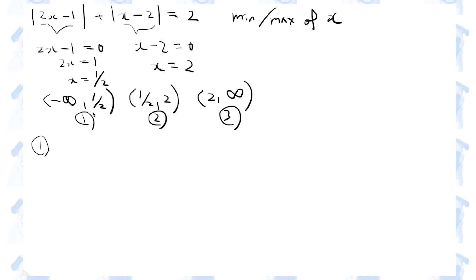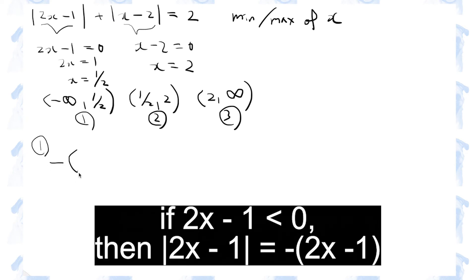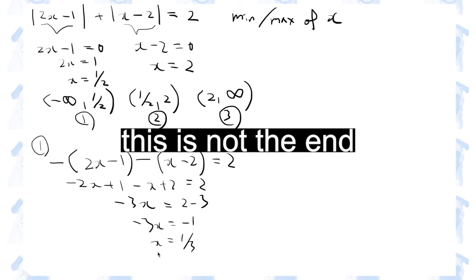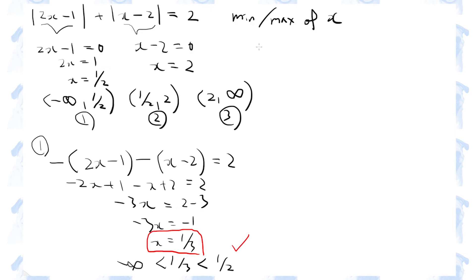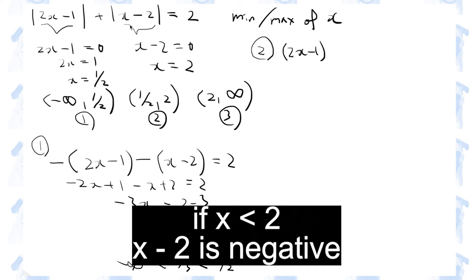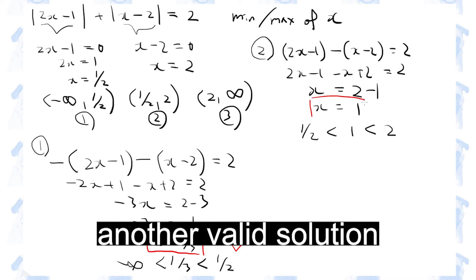If the value of x was in this first interval, then the value of this expression would be negative, so we need to put a negative sign before it, and then we can convert the absolute value sign into normal brackets. If the value of x was between these two values, this expression would also become negative, because 1 over 2 is smaller than 2. So again, you need to put a minus before the brackets and solve this equation. We have a possible answer, but we need to make sure that this value lies between these two values — and indeed it does. Let's check the second interval: the first expression will be positive, so there's no need to put a minus before the brackets, but the second expression will be negative when x is less than 2. x equals 1 is included in this interval, so x equals 1 is another solution.